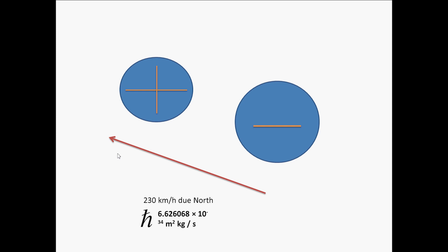So here we have two particles, one positive and one negative — we can think of them as a proton and an electron. As an example of a vector quantity: 230 kilometers per hour due north. The first part is the speed, the magnitude; due north is the direction.